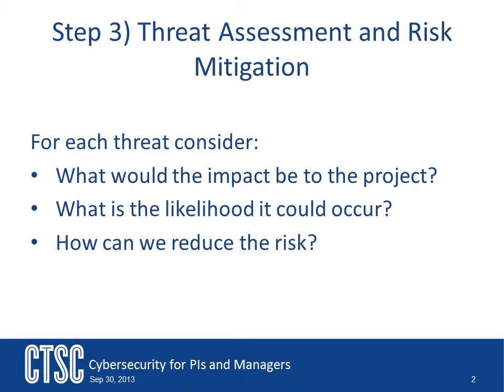The third step in the CTSC suggested process for performing a risk assessment is threat assessment and risk mitigation. In the previous video, we looked at identifying the threats that pose the risk to your system. As you look at each key asset in your system, you can begin to identify attack surfaces that exist and can be used by the threat to gain access to your system. With this information, you are able to identify the threats that your system faces, and with that information in hand, you are able to start evaluating those threats and determining how to manage the risk to your system.